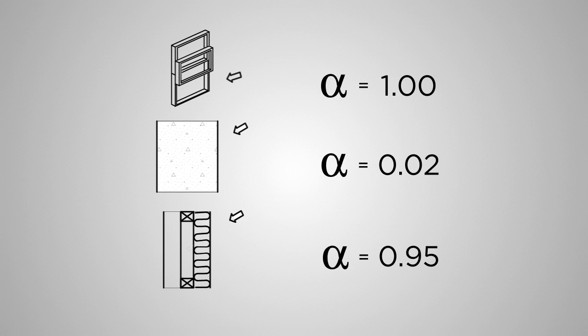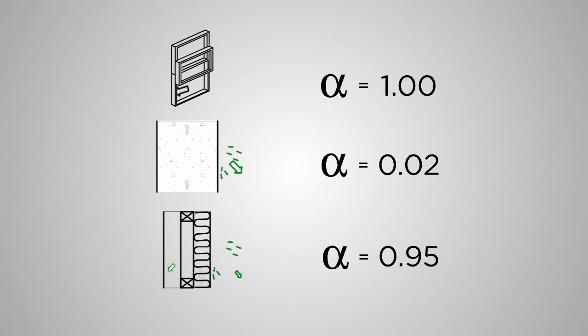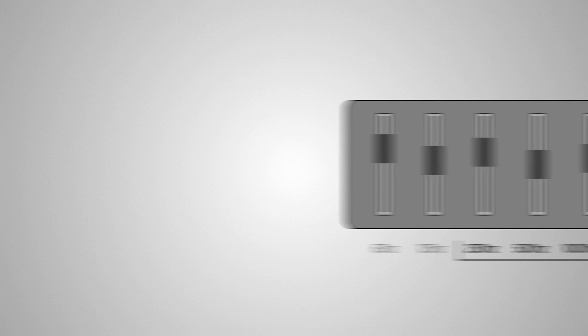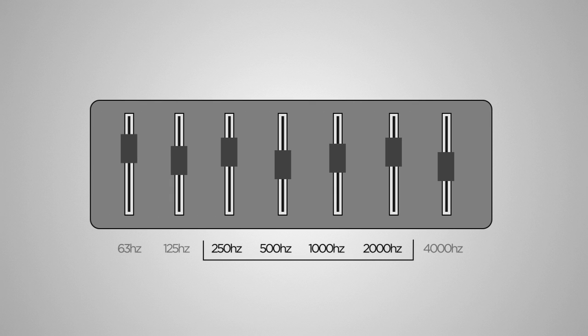There is almost always a single number available to summarize performance across frequencies. In this case, it's called the noise reduction coefficient, or NRC. It is calculated by simply taking the average absorption coefficient across four mid-frequency octave bands. As with almost all single-number metrics, it fails to be useful and can be downright misleading.